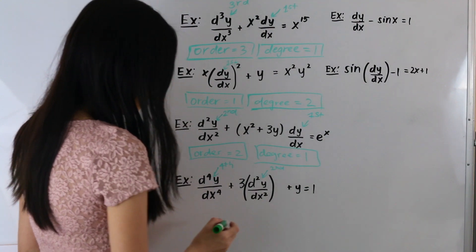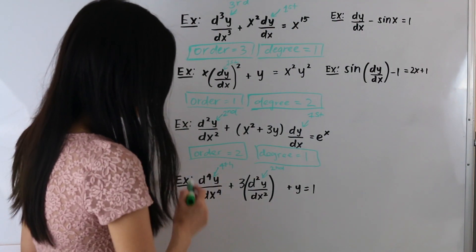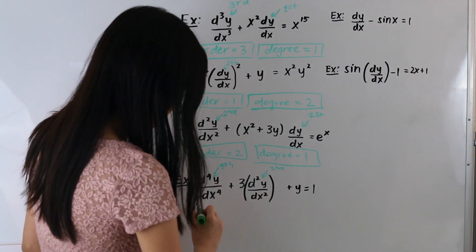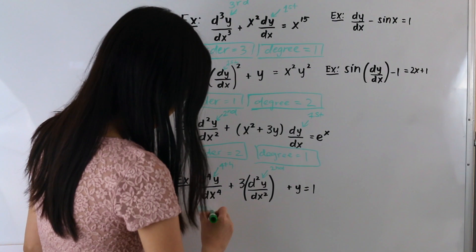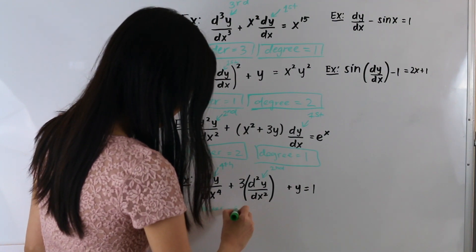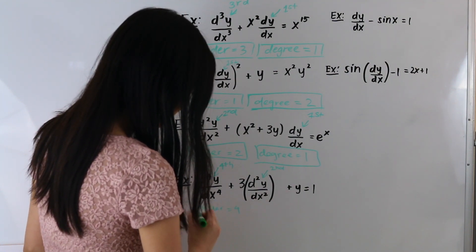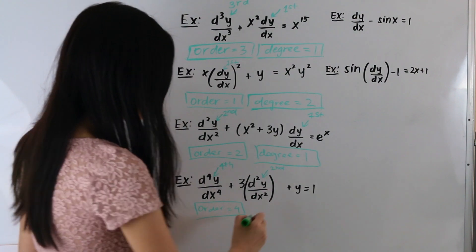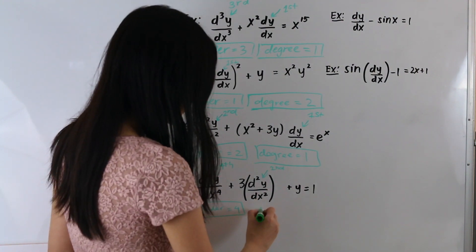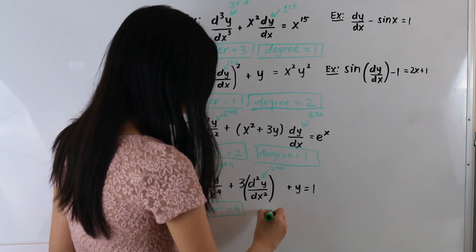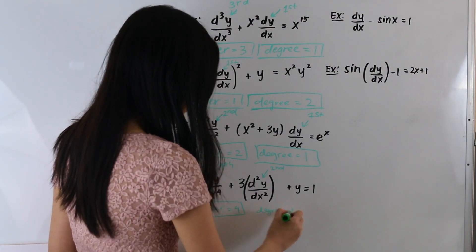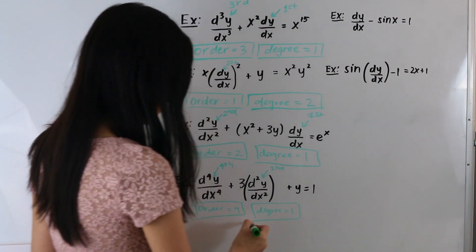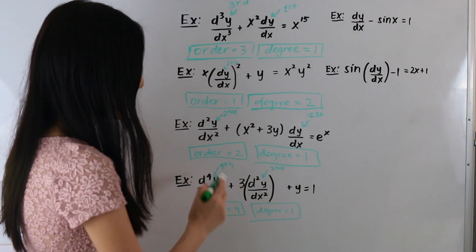Our order is our highest order derivative, so it is fourth order — our order is equal to 4. Our degree is equal to 1 because our highest order derivative is to the first power.